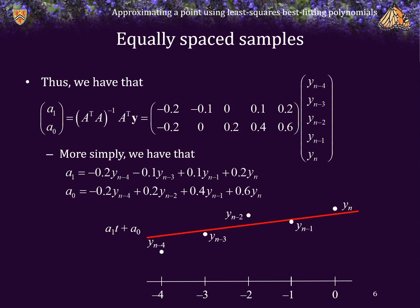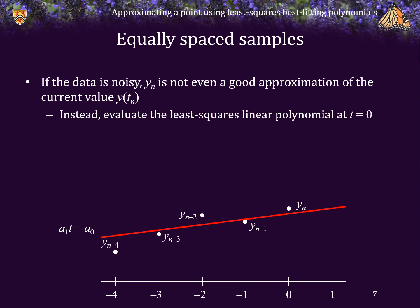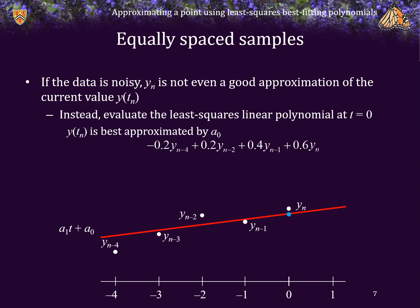That's actually quite nice because now we can use this line to estimate values. For example, if the data is very noisy, then the most recent reading may not even be a reasonable approximation of the true value. So how do we estimate our best approximation of the current location? We evaluate this interpolating polynomial at t equals 0, and if we substitute t equals 0 into a1 times t plus a-naught, that really means the best approximation of the current value is just a-naught.